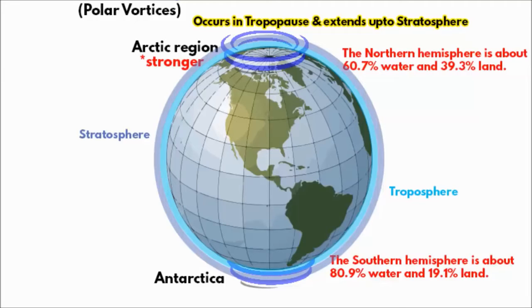The next thing you need to know is that a polar vortex is an area of low pressure. Now you may have a question: how come there is low pressure in the polar region? We have always read that a low pressure is an area of less dense air with warmer air temperatures. Then how come there is low pressure in the polar region? After all, everything in the polar region is cold, right?